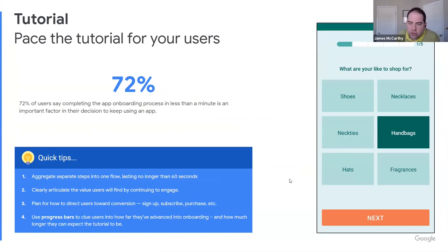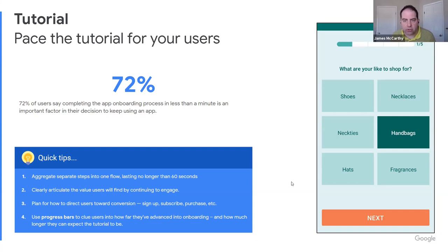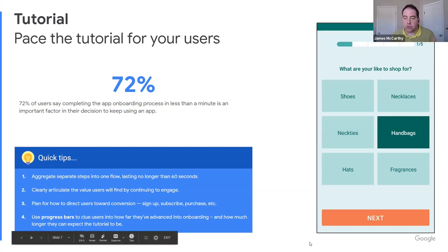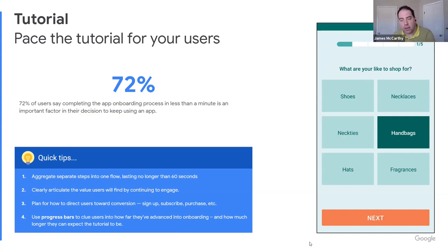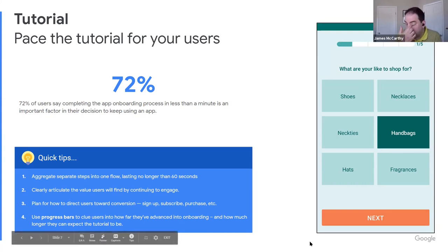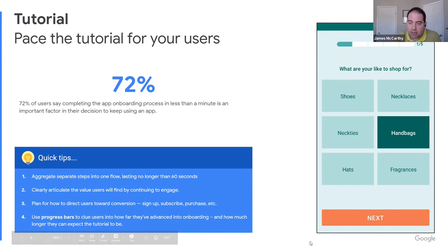A tutorial is generally required to introduce your user to the app, and tutorials can take lots of different forms. One thing we do at Google a lot now is pop-ups — if you're familiar with the app, like Gmail, it doesn't need to introduce you to email, but it'll pop up functionality to let you know where your Meet tab is. Another feature is to walk users through a tutorial step-by-step, but 72% of users say it has to be done within 60 seconds in order for them to keep using the app. If it takes longer than that, they're probably going to abandon you.